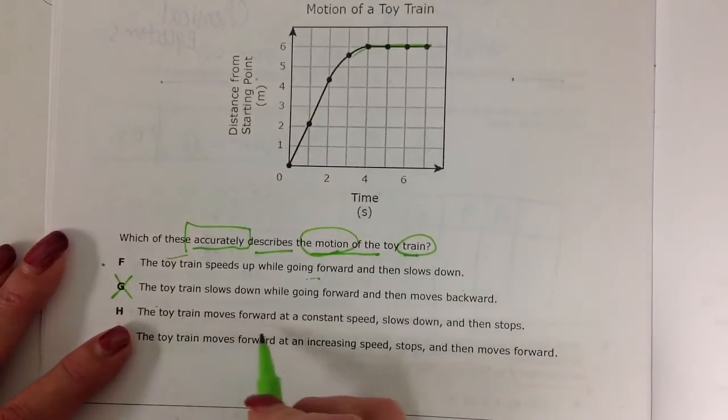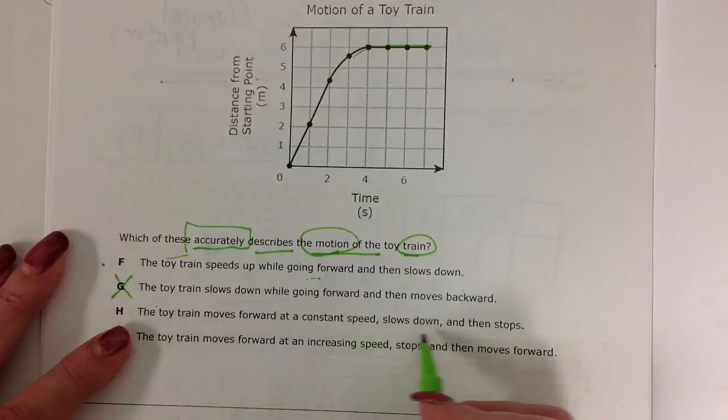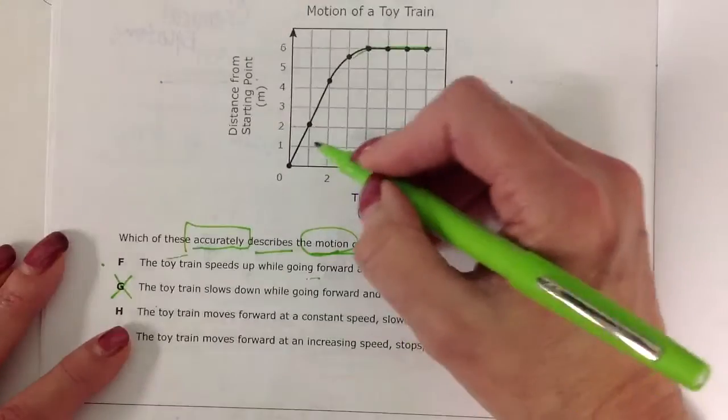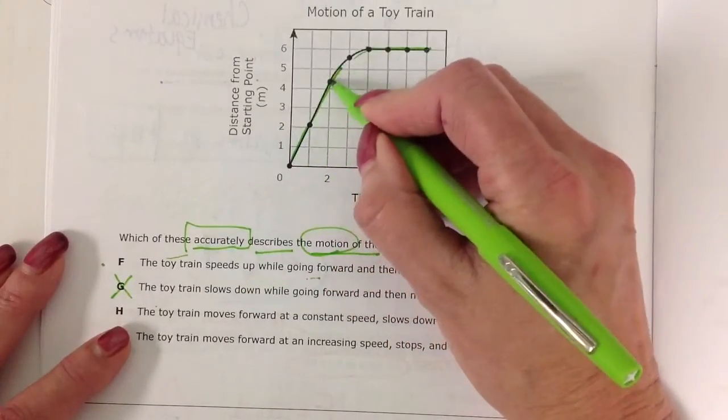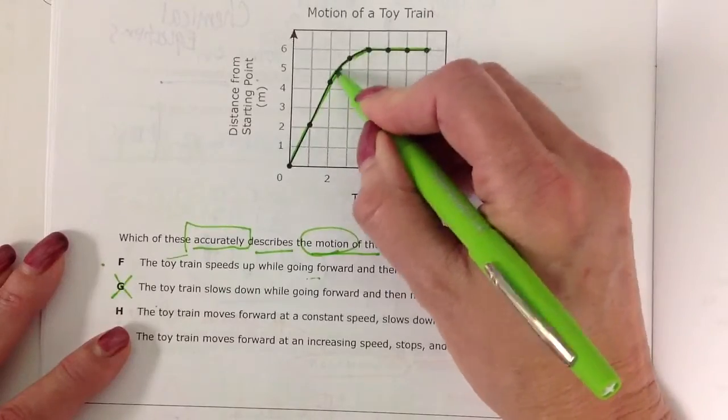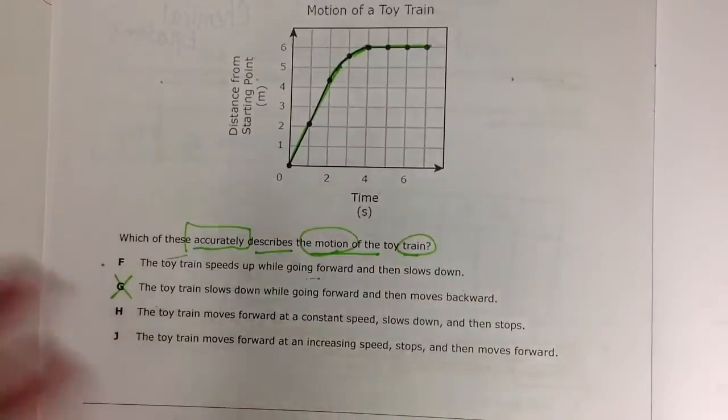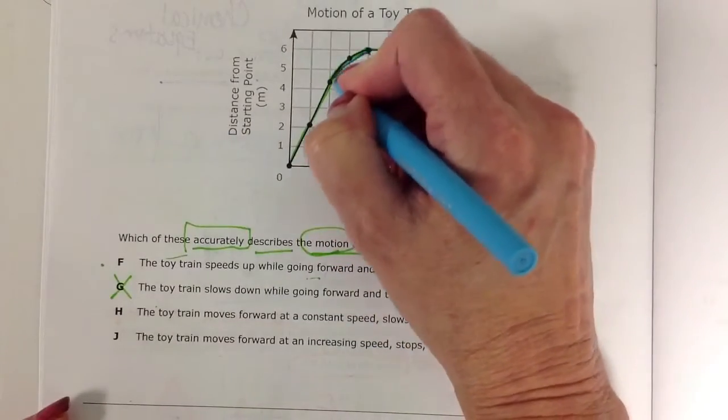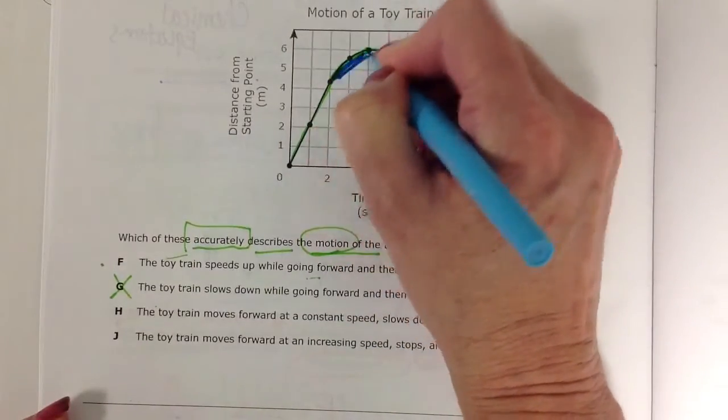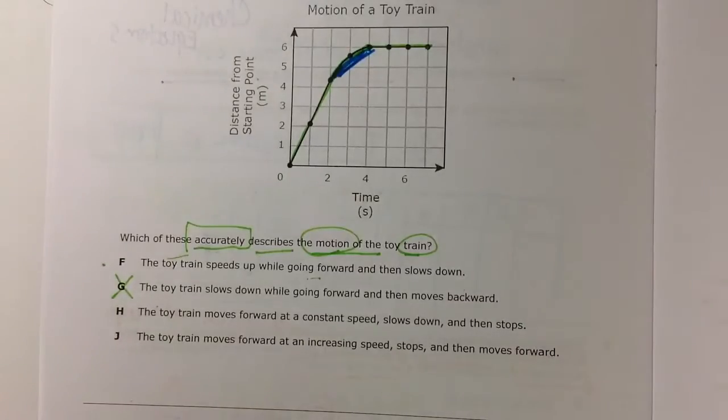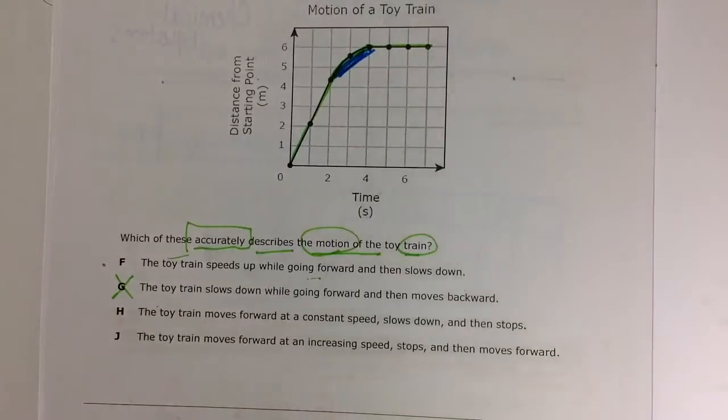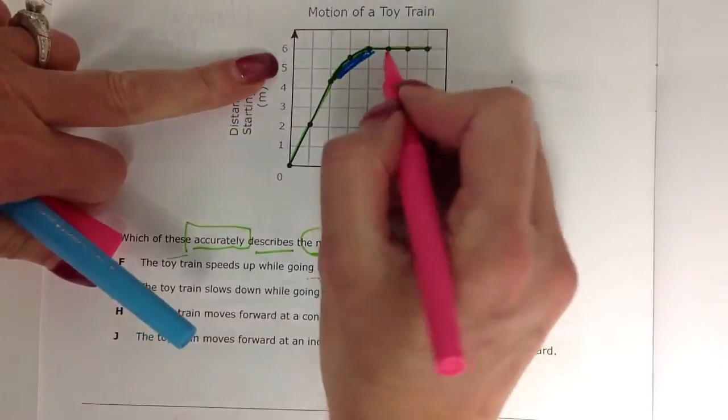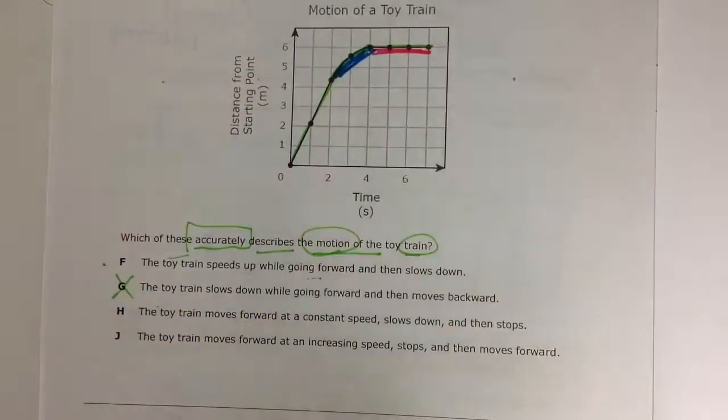The toy train moves forward at a constant speed, slows down, and then stops. So initially it's going at a constant speed, starts to slow. So let's color code that. Constant speed slows. And then at the last part of it, remember we said at six meters over all this time, it's stopped.